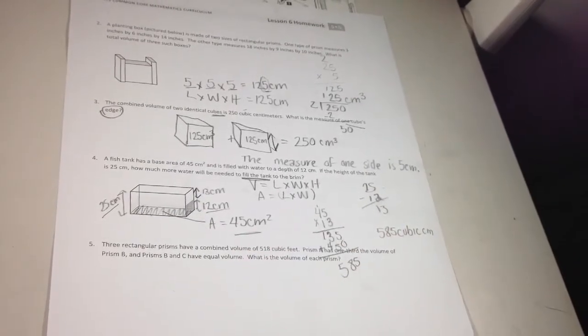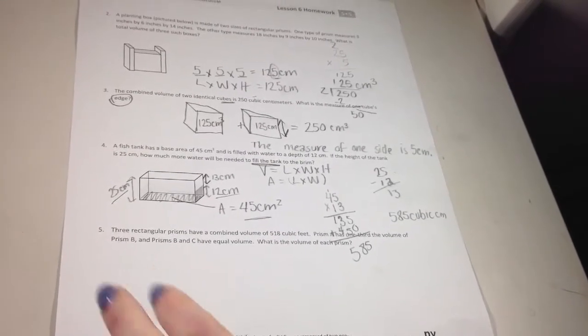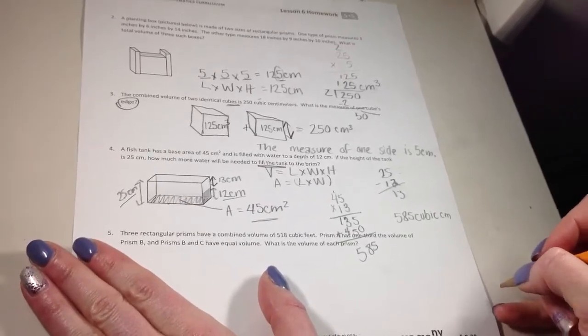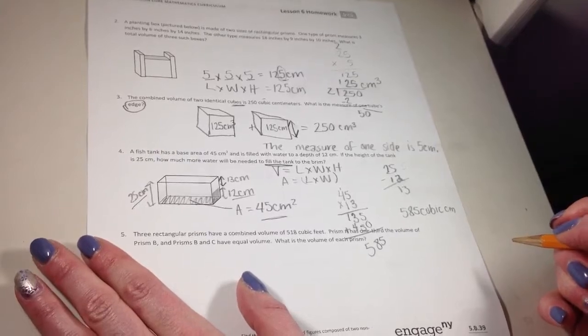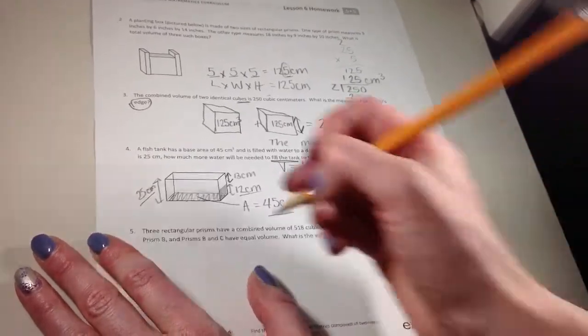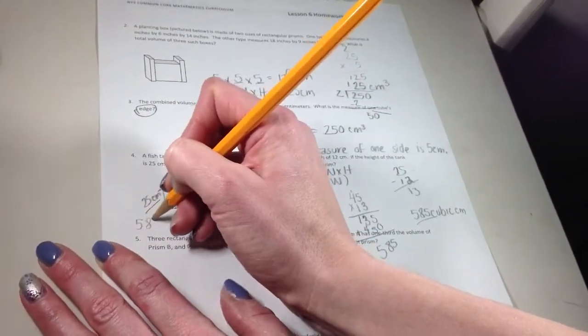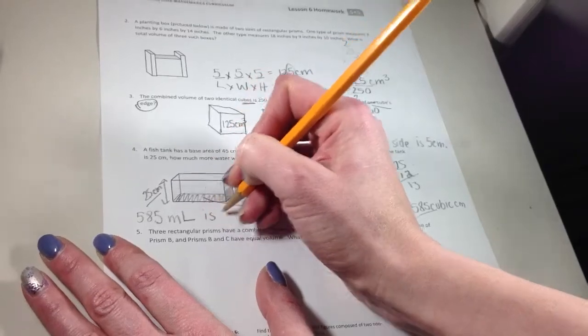So 585 cubic centimeters. The problem with that is I'm talking about water. So I probably want to write it in a liquid measurement, which we talked about yesterday would be milliliters. Since there's a one-to-one correspondence between a cubic centimeter and a milliliter, the measurement is still going to be 585. So 585 milliliters is needed.